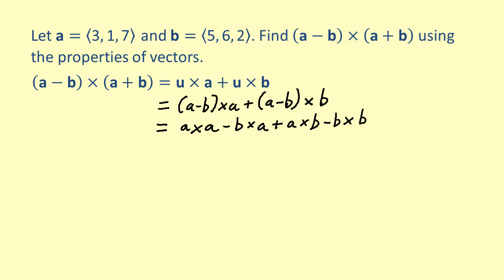Recall that a vector crossed with itself is equal to the zero vector, so the first and last terms are zero. This leaves us with negative b cross a plus a cross b. Notice that we can apply the anticommutative property: we know that a cross b is equal to negative b cross a, so we can rewrite this expression as 2 times a cross b.